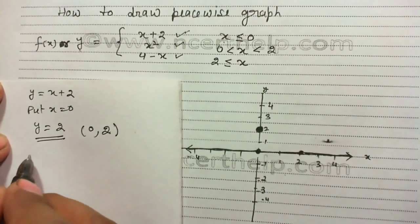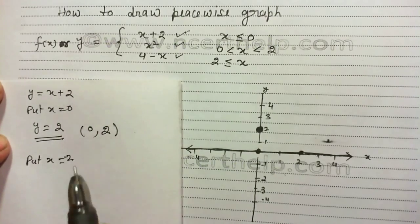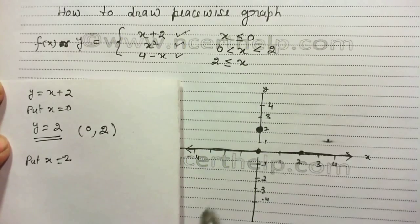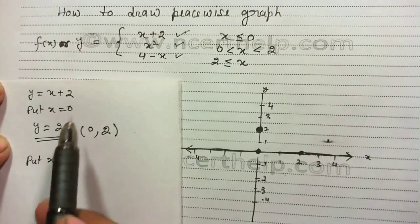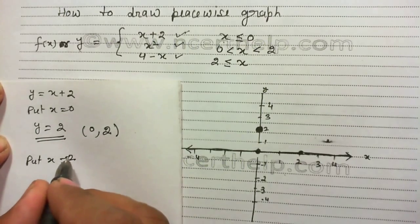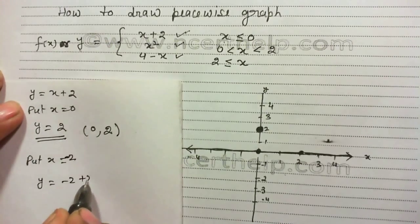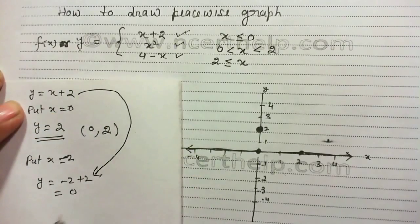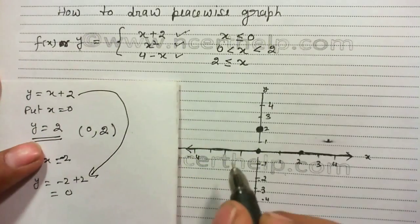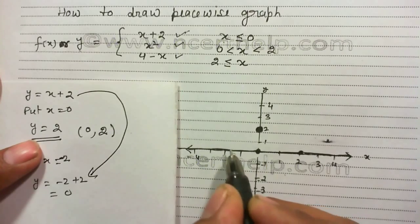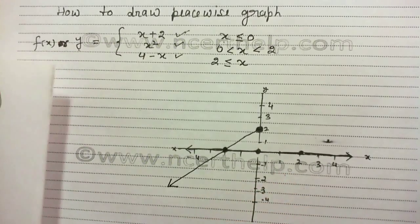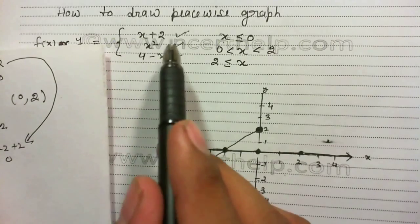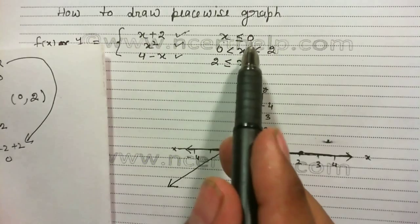Now take another point. I will put x equal to minus 2. I am taking a negative value because here the value of x must be less than or equal to 0. If I put x equals minus 2 into the equation y equals x plus 2, I get minus 2 plus 2 which gives me 0. So the second point is (−2, 0). This gives us the line y equals x plus 2 for x less than or equal to 0.